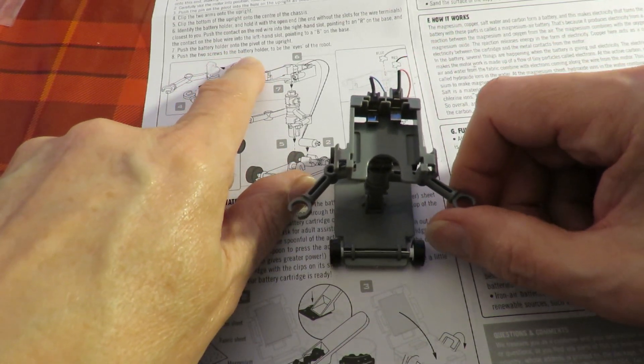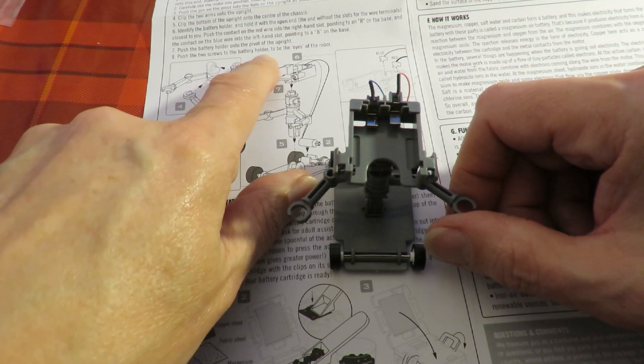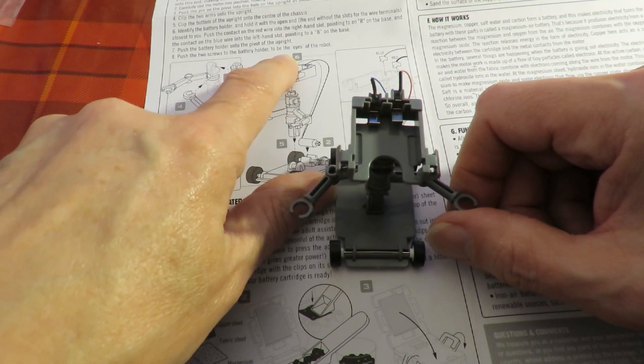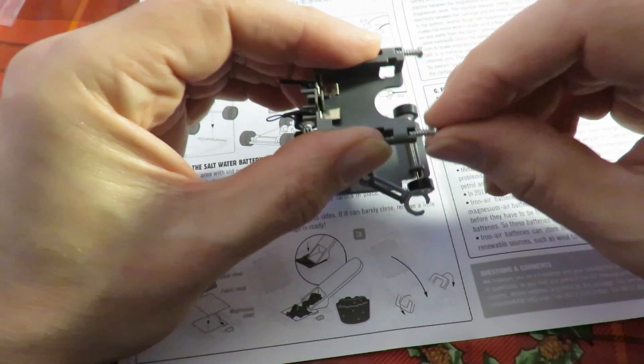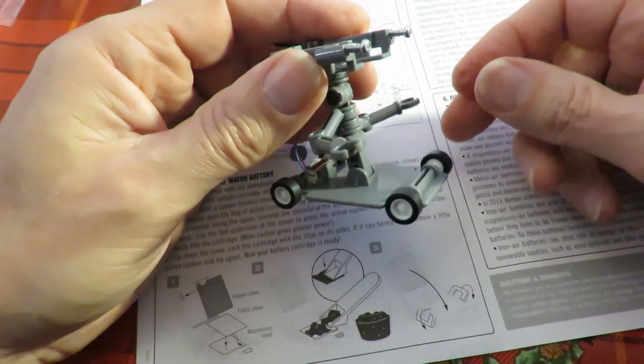Push the two screws to the battery holder to be eyes of the robot. You might need a screwdriver if you want to push them in any further.